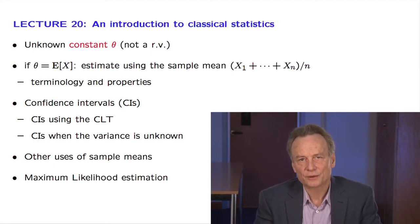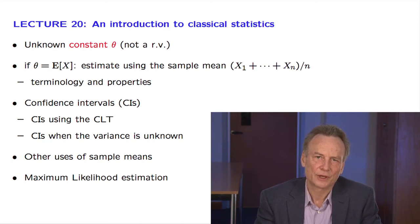We will then continue in the direction of greater generality. We will see that by repeated use of various sample means, we can also estimate more complicated quantities, such as, for example, the correlation coefficient between two random variables.